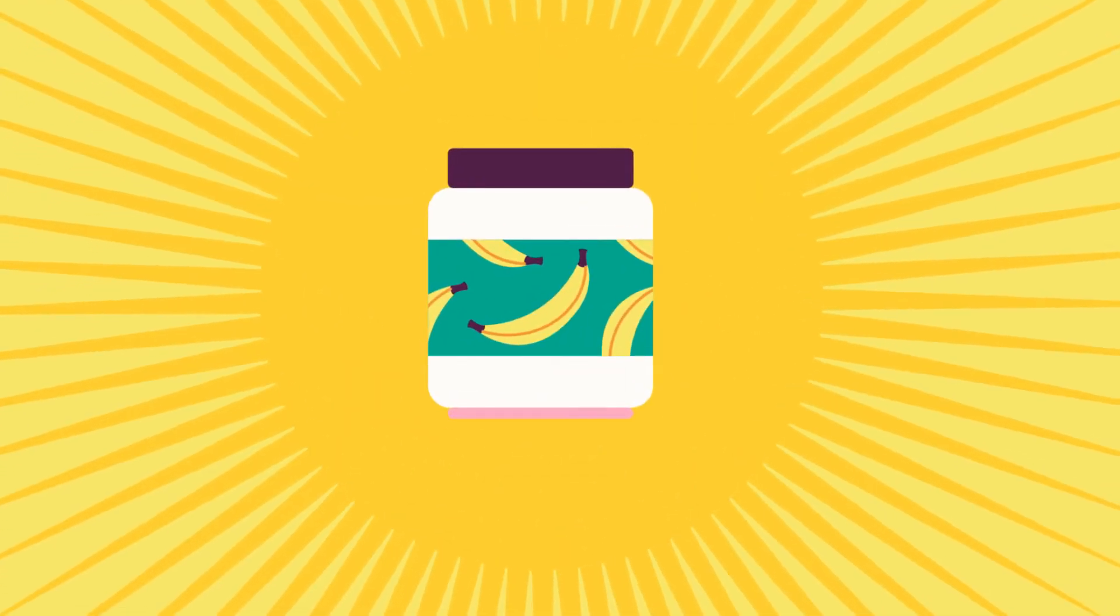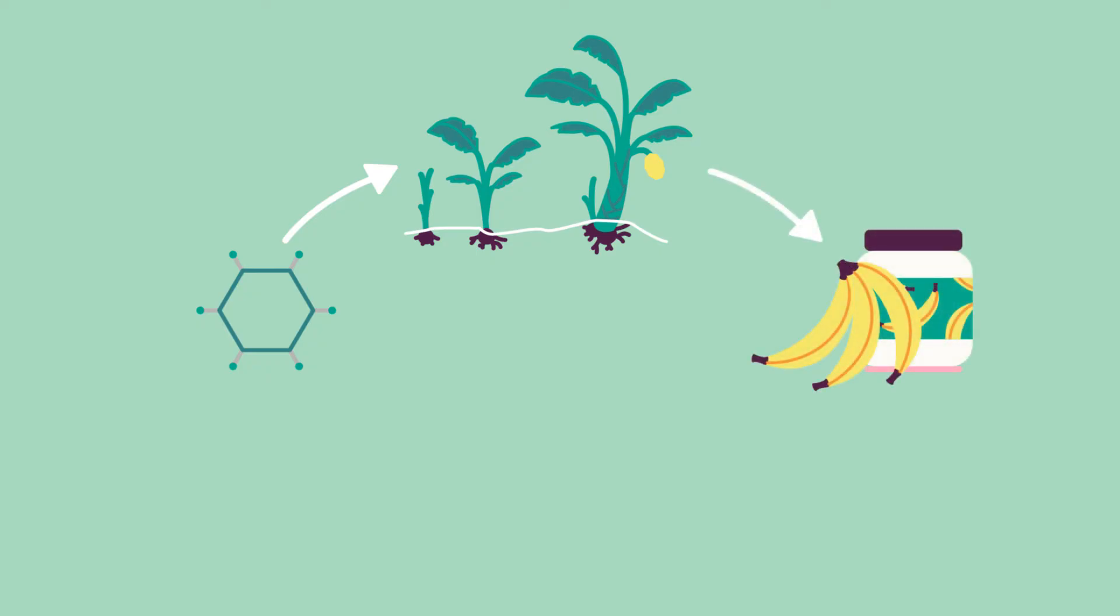The solution? Enter edible vaccines. Scientists can inject an altered form of a virus into a plant, such as a young banana plant. As the plant grows, its cells produce the virus proteins, but not the infectious part. When people eat a genetically engineered banana, which is full of virus protein, their immune systems build up antibodies to fight the disease, just like a traditional vaccine.